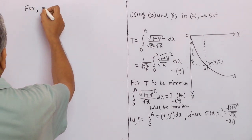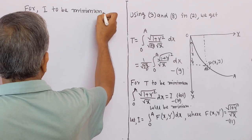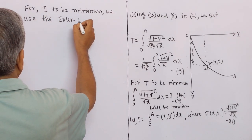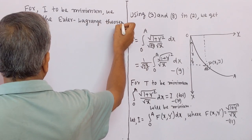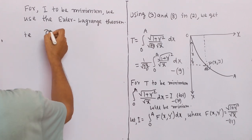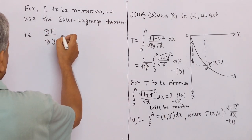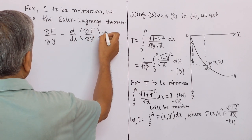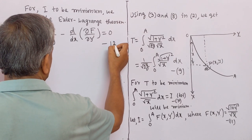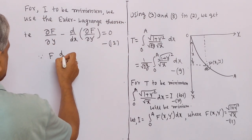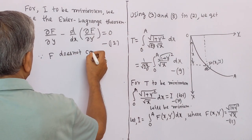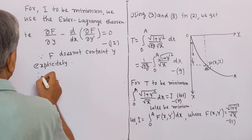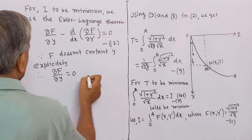For I to be minimum, we use the Euler-Lagrange theorem. That is, ∂F/∂y − d/dx(∂F/∂y') = 0. Let this be equation number 12. Since F does not contain y explicitly, therefore ∂F/∂y = 0. Let this be equation number 13.